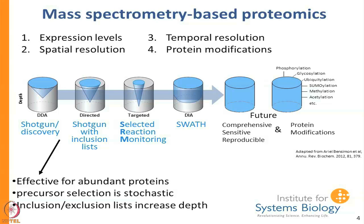If instead of selecting the most abundant precursor you have an inclusion list — a set of precursors you are looking for to begin with — you can actually get deeper into the proteome, but it comes at a cost of losing some coverage at higher concentrations. SRM carries that trend further still. It is very sensitive, but because you have a limited number of precursors you are trying to select, the mass spectrometer has to spend more time finding the fragment ions of interest.